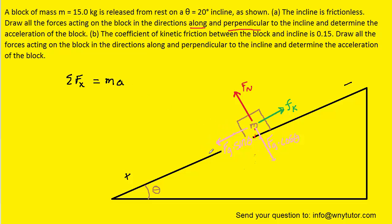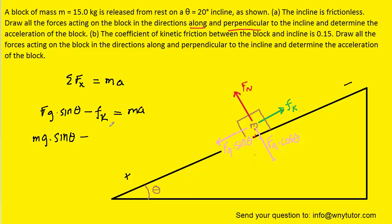There are two forces acting in the x direction: FG sin θ pointing in the positive direction (down the ramp), and the kinetic frictional force Fk pointing up the ramp, which is the negative direction — so we include a minus Fk. We replace FG with mg, and Fk with the coefficient of kinetic friction times the normal force.